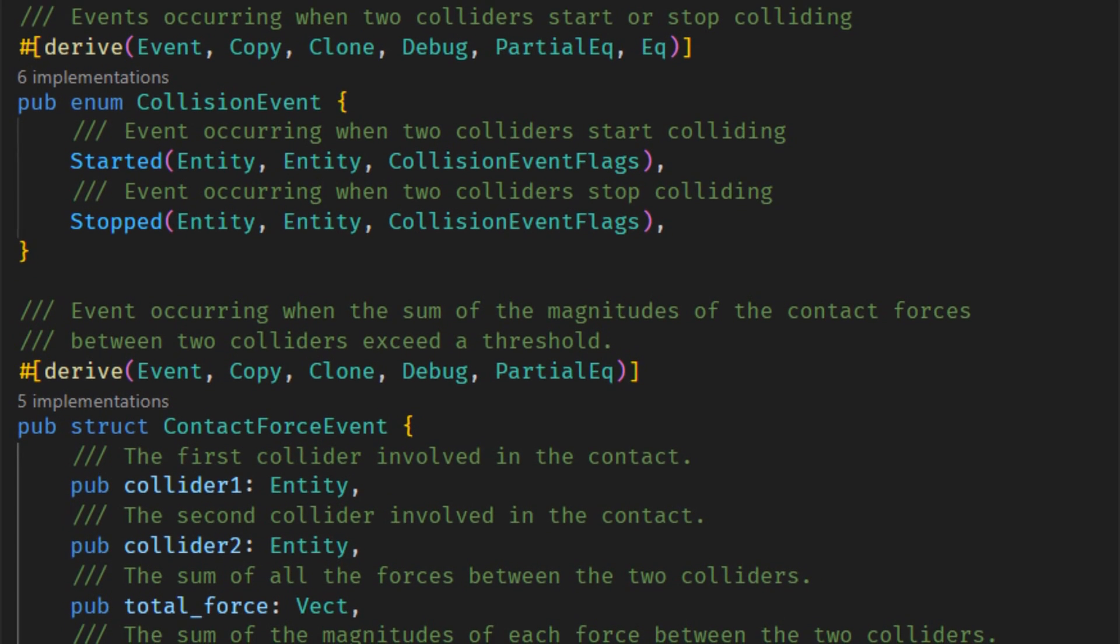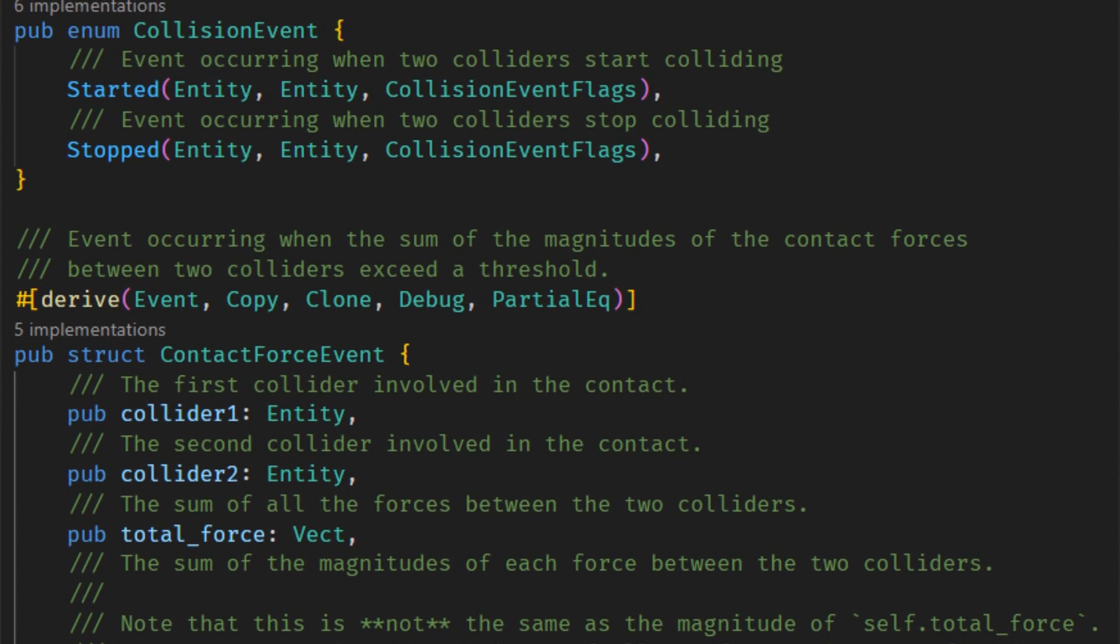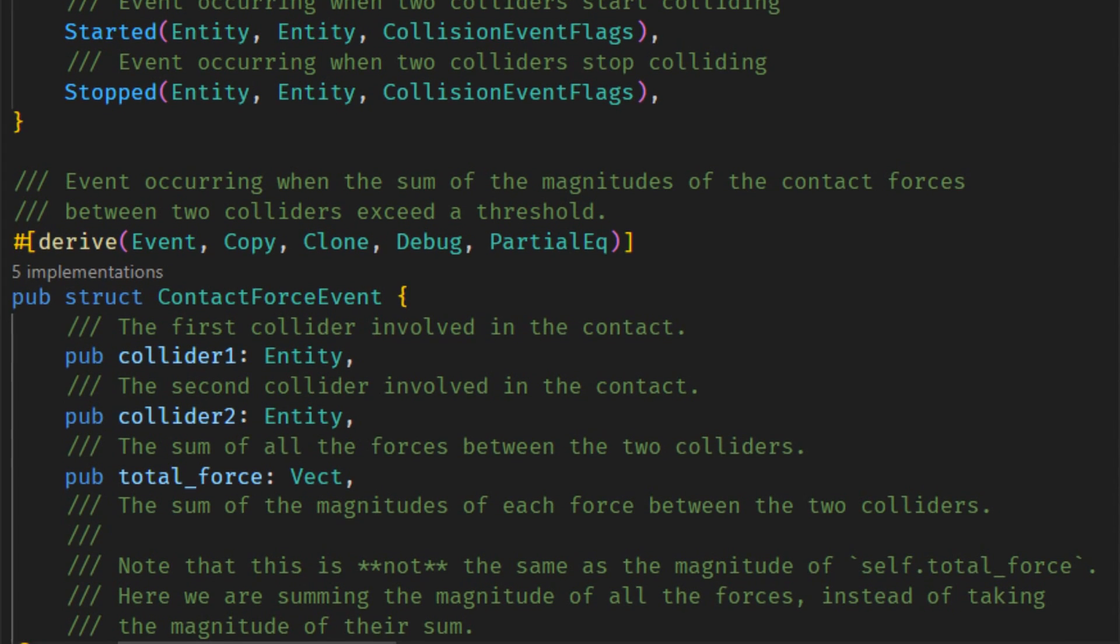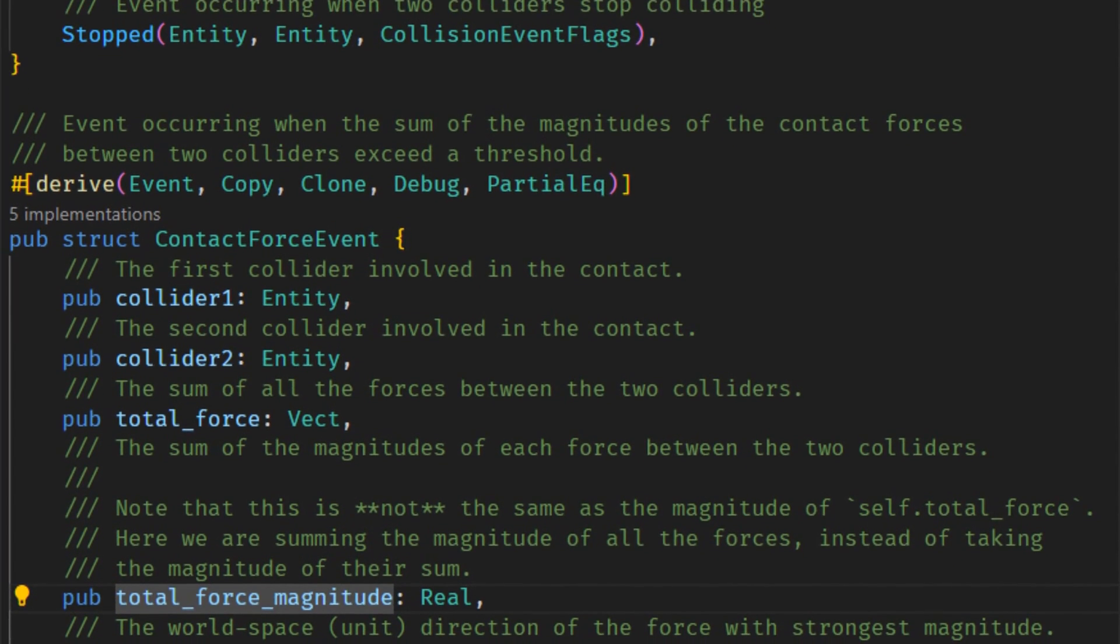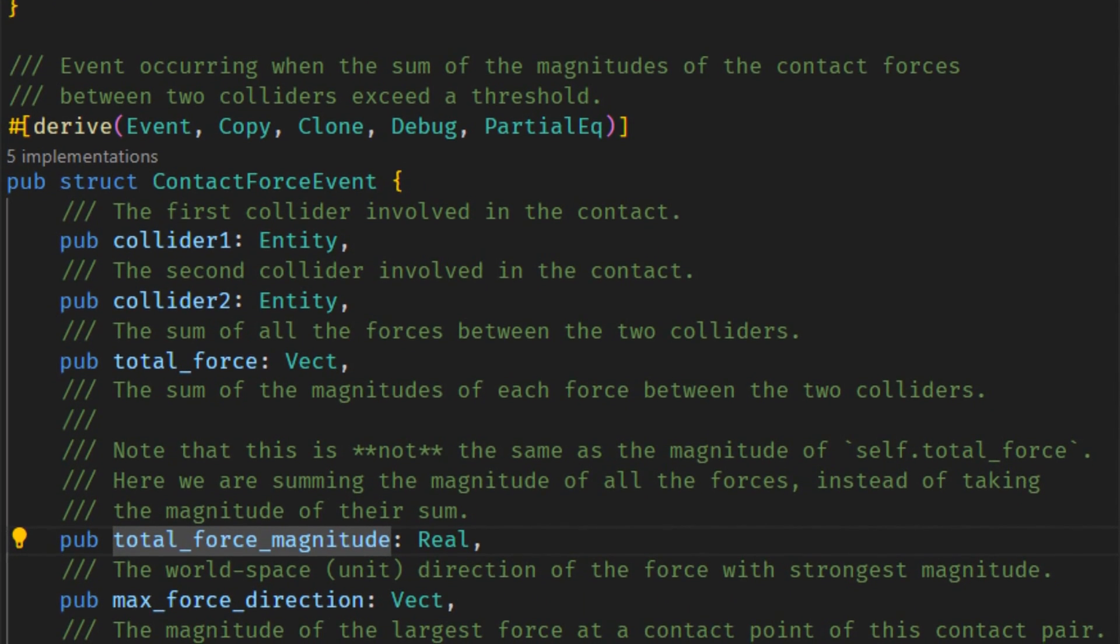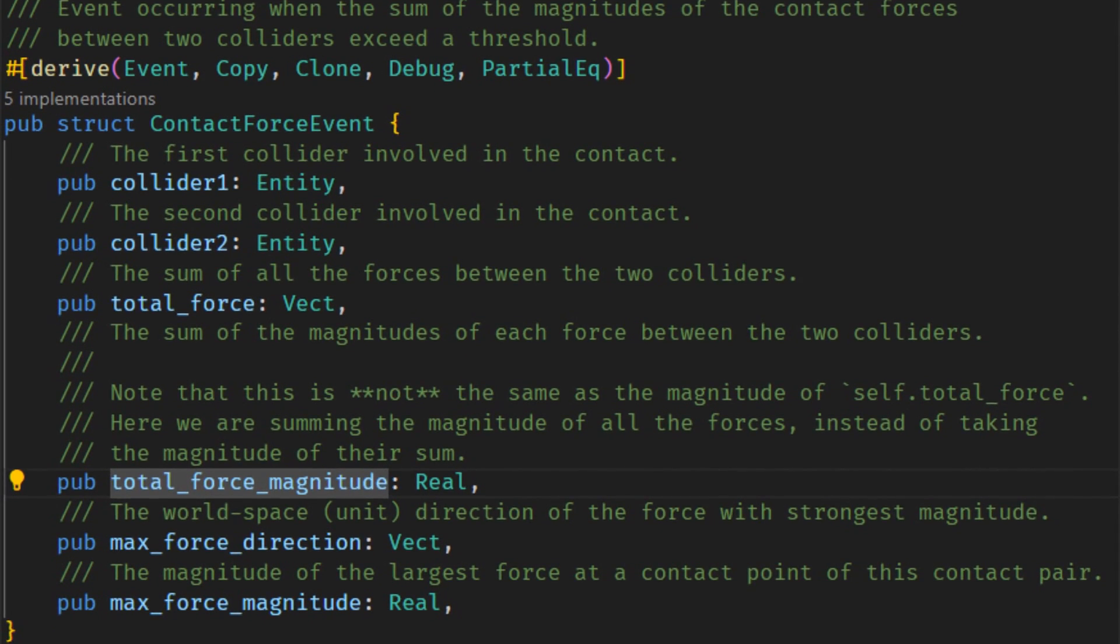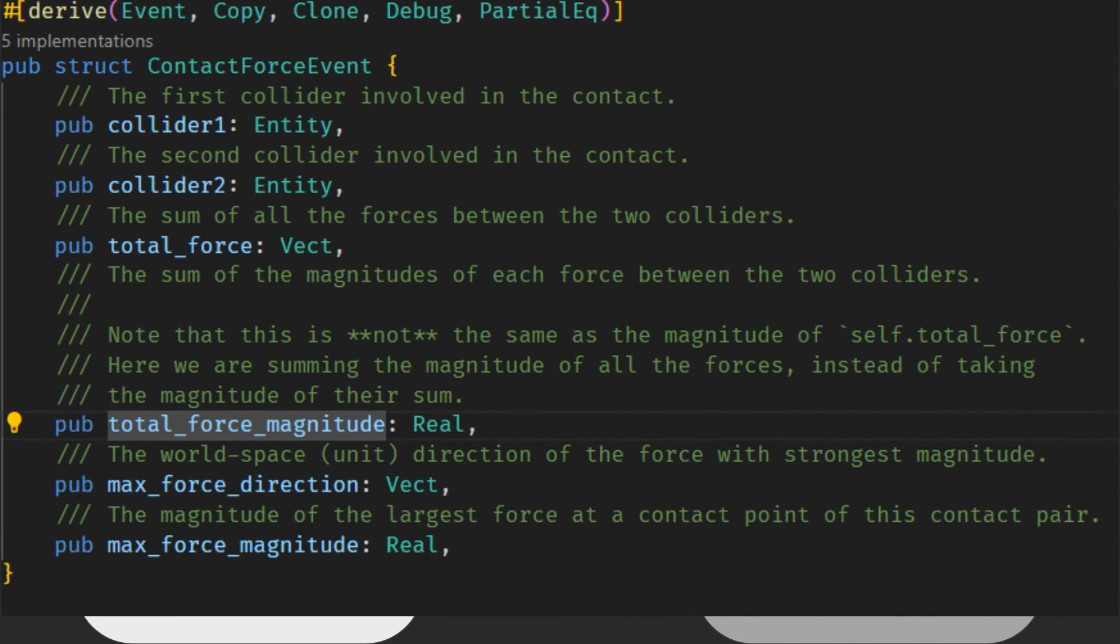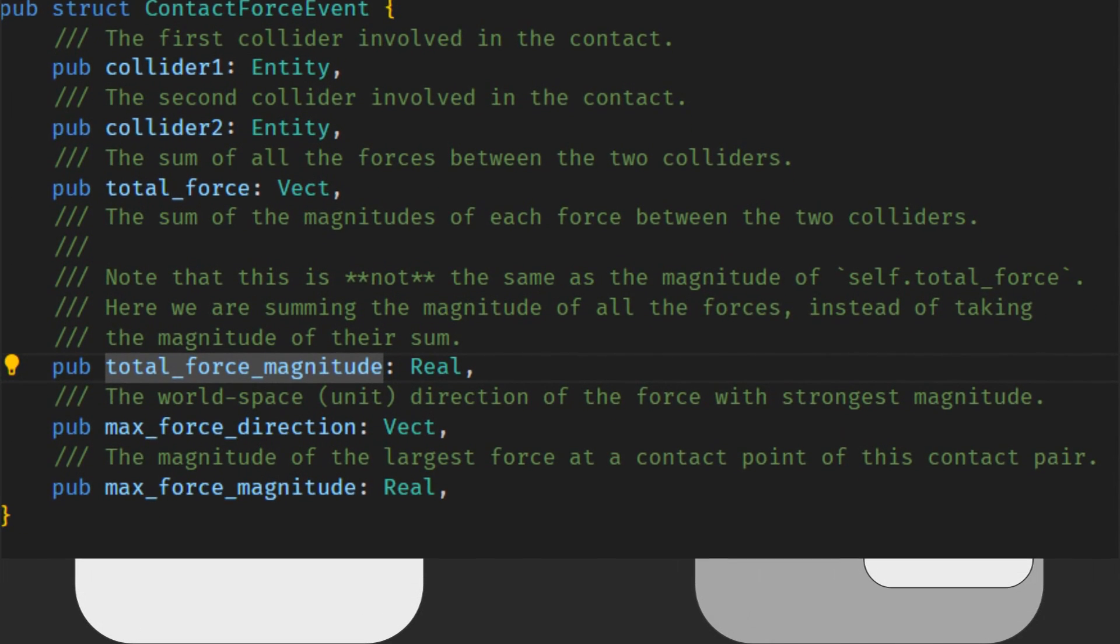There is also events that Bevy Rapier will emit whenever a collision happens. These include a start and stop event that provides both the entity that is being collided with and the entity colliding. I don't know how it distinguishes which is which. And also a set of flags that can indicate slightly more information, such as if one of the colliders is a sensor, and if the reason that the collision stopped is because one of the colliders was deleted. Bevy Rapier may add more to these flags in the future, but currently those are the only two that are provided in the event that is emitted.